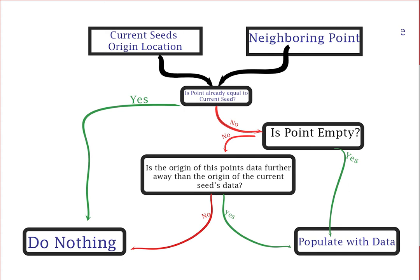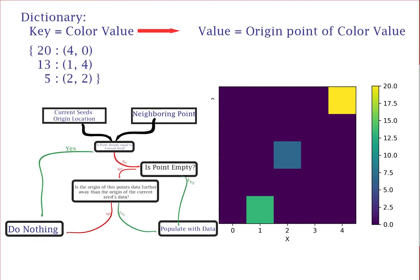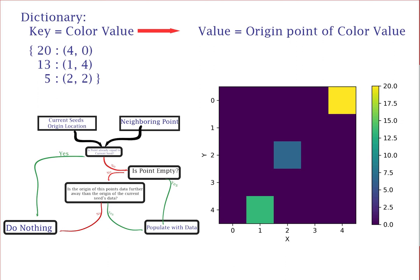However, if not, you must compute the distances from this point to its current origin point, as well as from this point to the current seed's origin point. Whichever is less wins over and becomes the value of that point.